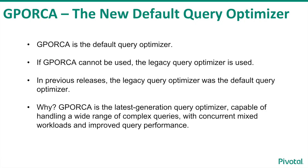The first significant change is in the default optimizer used to optimize a SQL statement. GPORCA is initially called to optimize a query for execution. In a small number of SQL use cases, GPORCA will pass the optimization request off to the legacy query optimizer, still available in Greenplum 5. Why the change? GPORCA is the latest generation query optimizer, capable of handling a wide range of complex queries with concurrent mixed workloads and improved query performance.